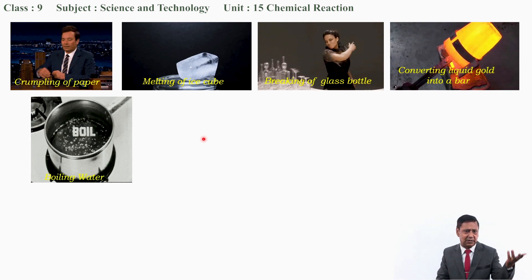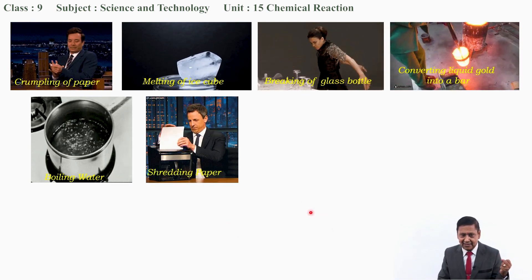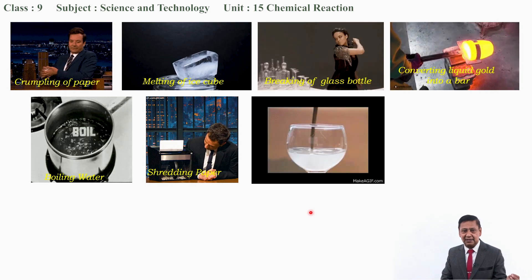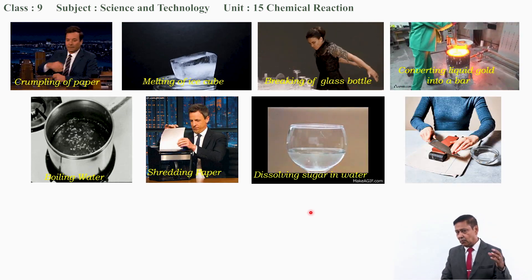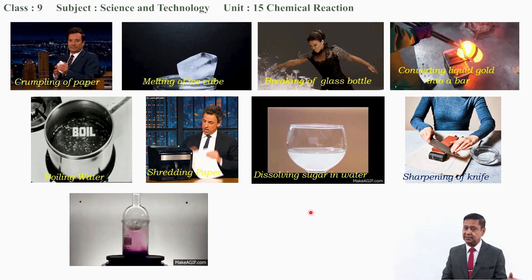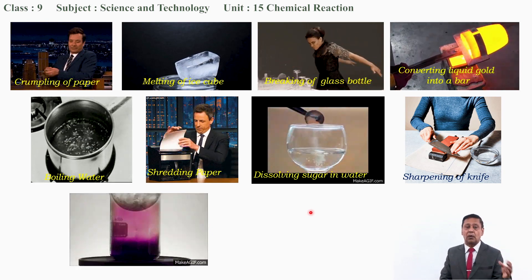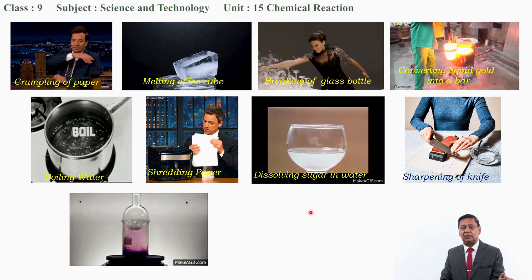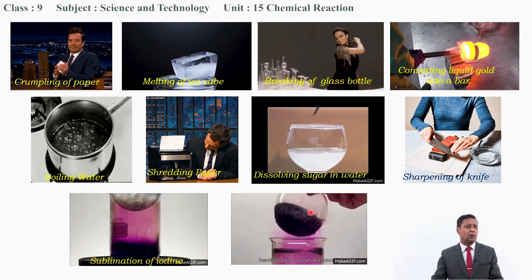And this is another video clip — we boil water like this. And another: shredding paper — a man is shredding paper very fast. And this: sugar is dissolved in water. A woman is sharpening a knife. And this is the sublimation of iodine. Iodine is heated and it converts to vapour. When it comes in contact with the cold surface provided by a round flask in which pieces of ice are taken, it cools down and converts again into the same iodine. Crystals of iodine can be obtained this way.